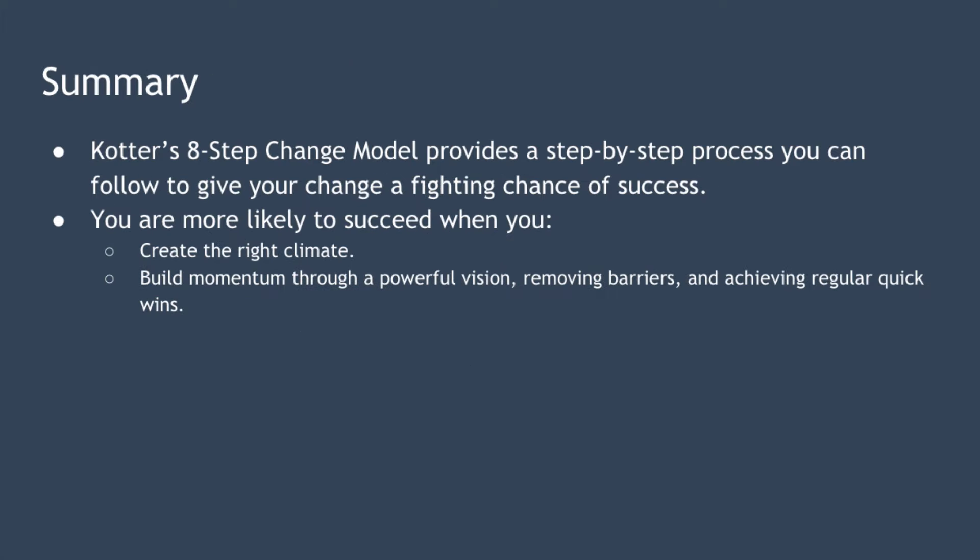In summary, changing organizations successfully is hard and challenging. Kotter's eight-step change model provides a step-by-step process you can follow to give your change a fighting chance of success. When you take the time to create a climate for successful change and build momentum through a powerful vision, removing barriers and achieving regular quick wins, then you are more likely to be successful.